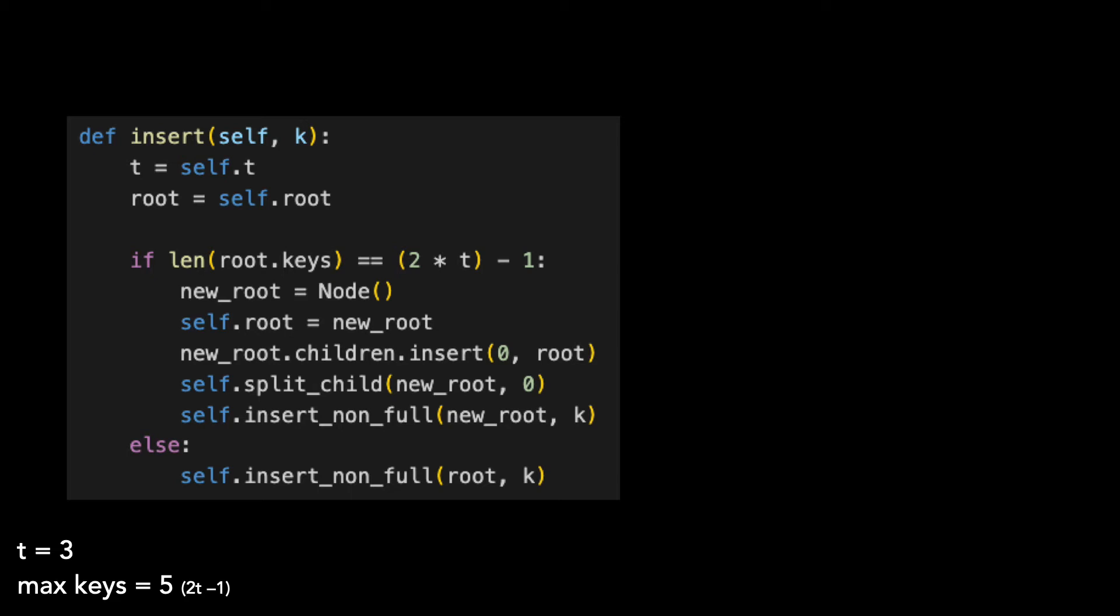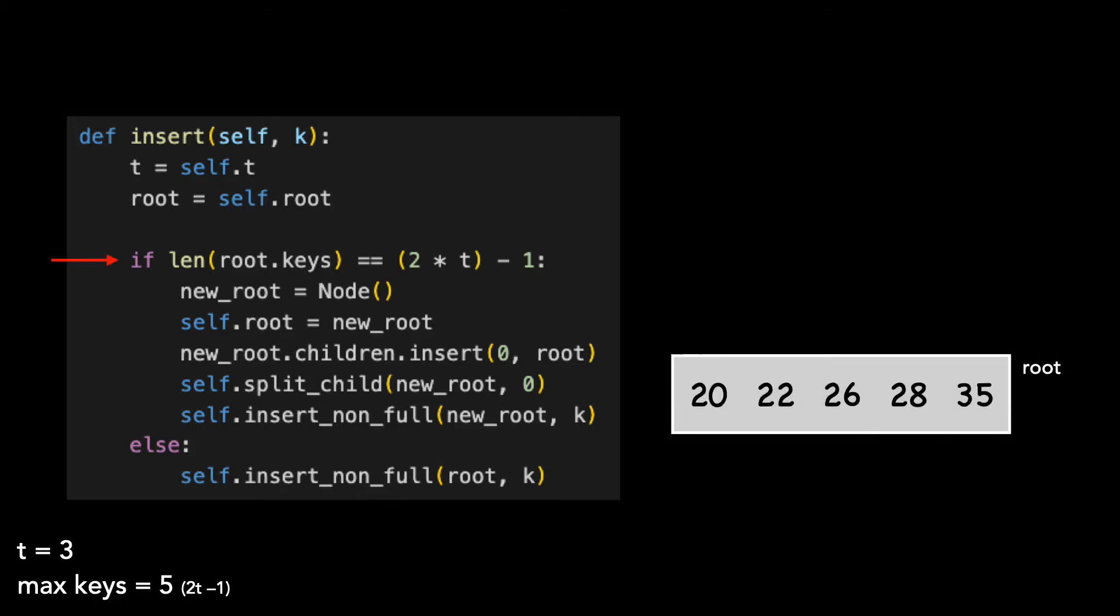Here's the code for insert. We first need to check the root to see if it's full. If it is, we create a new empty node and add it to the B-tree, and the height of the tree grows by one. We set the tree's root to the new node, then add the old root as a child of the new root.